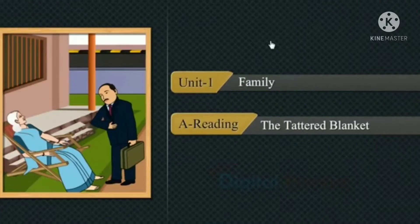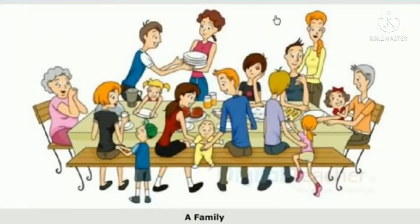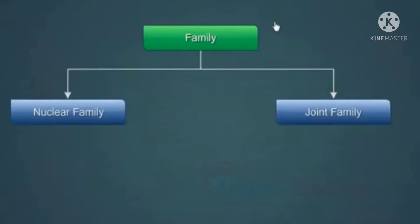Welcome to the reading section, The Tattered Blanket, of the unit Family. As we know, a family is a group of people consisting of parents and their children living together as a unit. Usually we see two types of families in our society: nuclear family and joint family. Let us observe the differences between a nuclear family and a joint family.